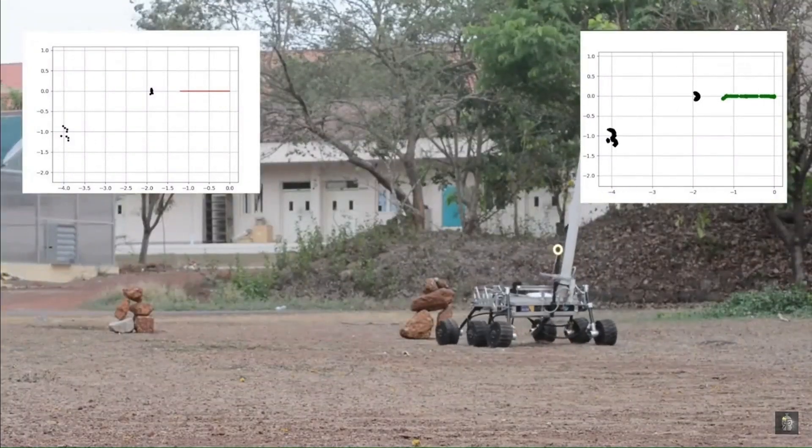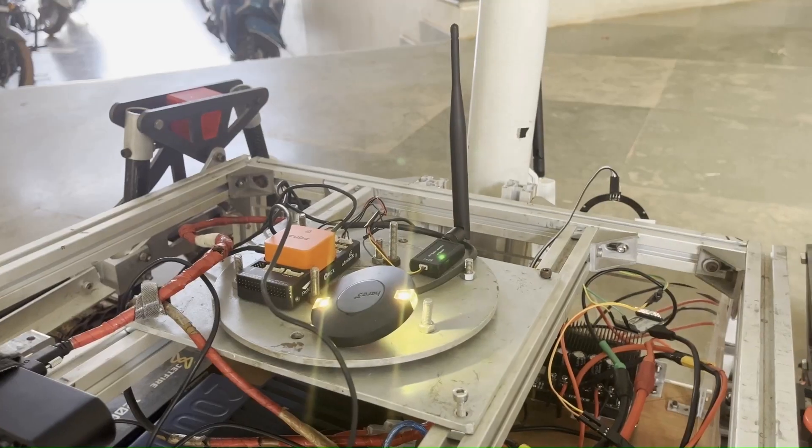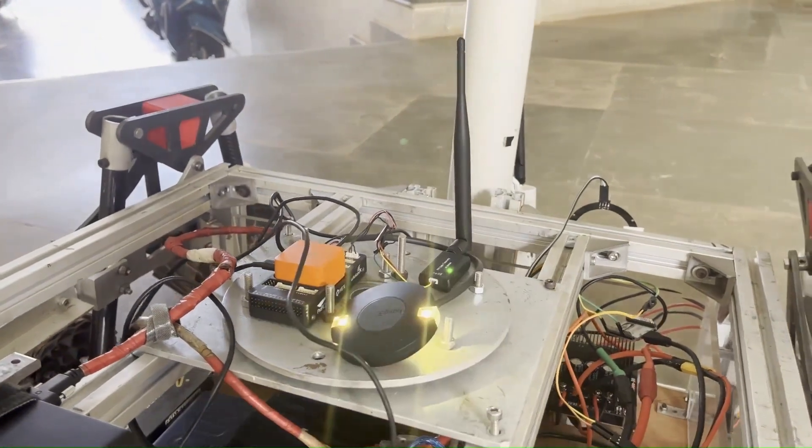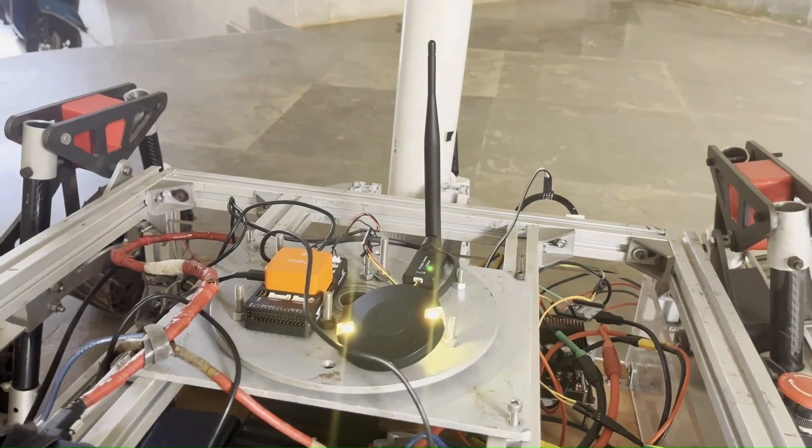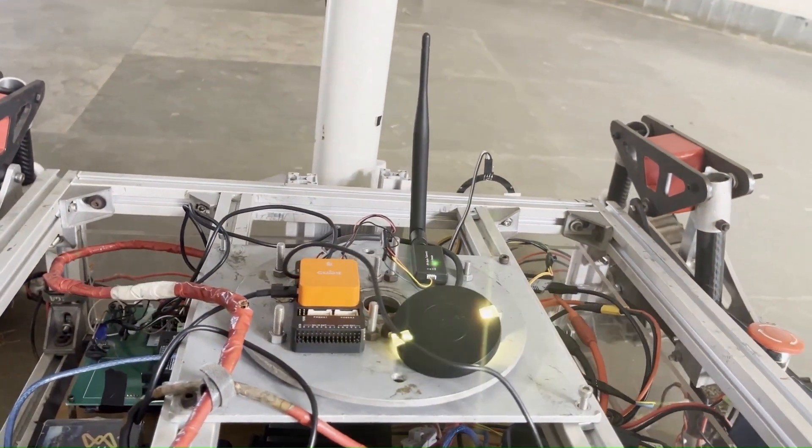This year, we have prioritized accurate localization, mapping and planning in the autonomous subsystem. To achieve this, we have implemented real-time kinematics ensuring centimeter-level GPS coordinates through seamless communication between the rover and the base.